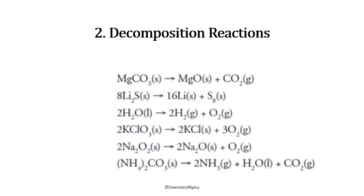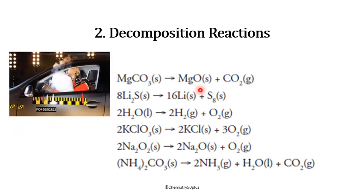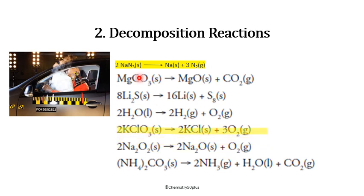If you look at these examples, you will find the pattern of forming two or more products from a single reactant. A practical real-life example is the decomposition of sodium azide in automobile airbags — sodium azide decomposes into nitrogen gas, which expands and protects the driver. Here, carbonates and chlorates are special cases: in most cases you get elemental form, but with carbonates you get non-elemental compounds such as MgO and CO₂, and with chlorates you get a compound and an elemental form.